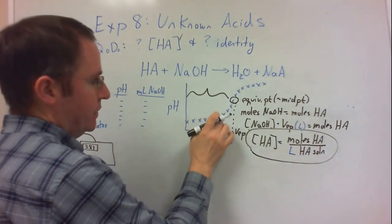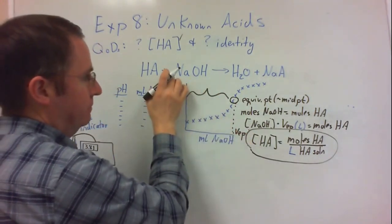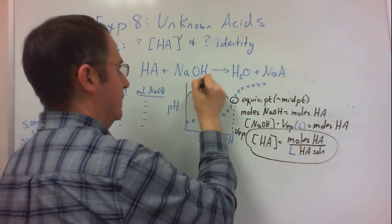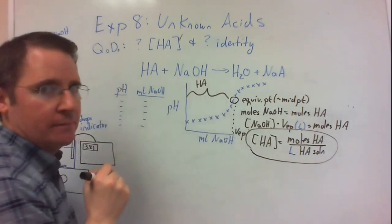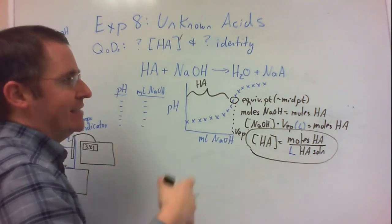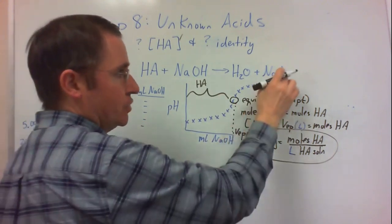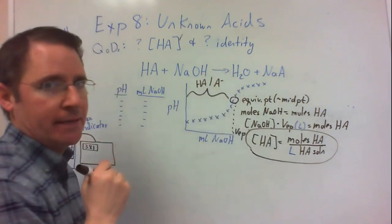In this area, in this region, I've started titration but haven't completed yet. So I do have some unreacted weak acid present. But as the titration has started, I've also produced some of this weak acid's conjugate base.